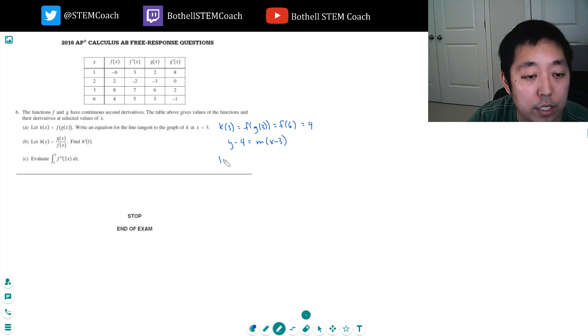So I need to know the derivative at 3. The derivative is, I got to do chain rule. I take the derivative of the outside, derivative of the inside. It's the derivative of f times the derivative of the inside. So this is f prime, again g of 3 is 6, so f prime at 6 is 5, g prime at 3 is 2.